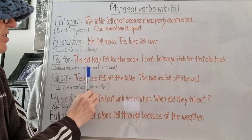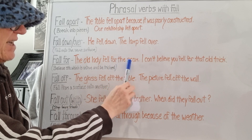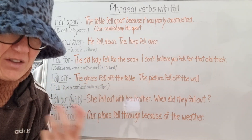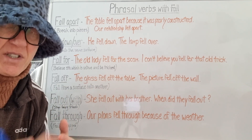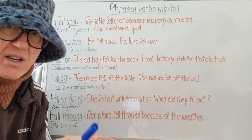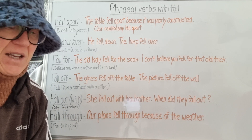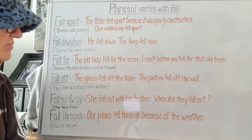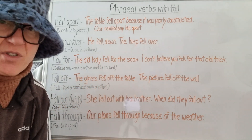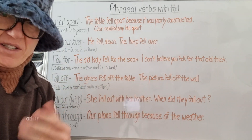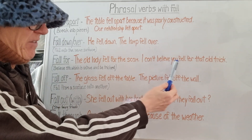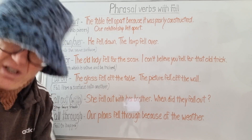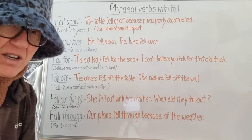'Fall for' is to believe something which is untrue and be tricked. The old lady fell for the scam — she believed what they were telling her and they stole her money. For example, people knocked on her door, told her they were offering an insurance opportunity where if she gave them money she'd get something at the end. She said 'that sounds good,' signed over her bank details, and they stole her money. This is very common online as well. It can also be more innocent, like a joke you play on friends: 'I can't believe you fell for that old trick — look behind you!' You believed there was something behind you, you looked, it wasn't true, you were tricked. Very childish.